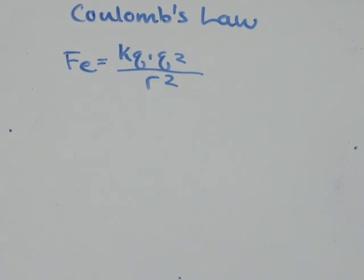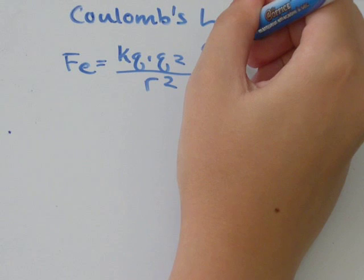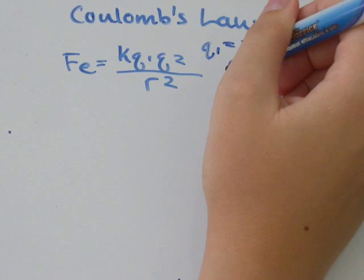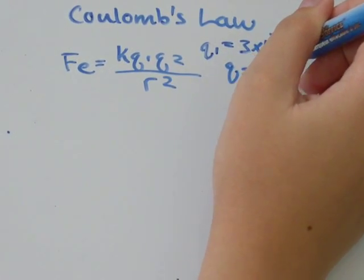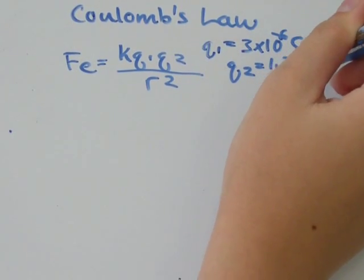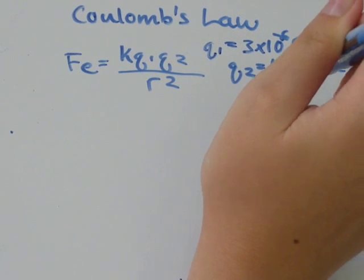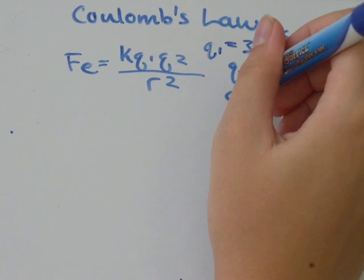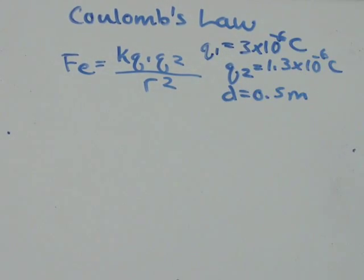So we've got a question and it says, find the electric force between two charges. The first charge, or Q1, is equal to 3 times 10 to the negative 6 Coulombs, and the second charge is equal to 1.3 times 10 to the negative 6 Coulombs. We know that the charges are at a distance of 0.5 meters apart.